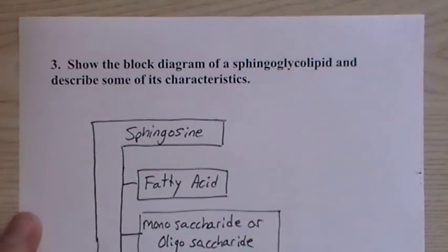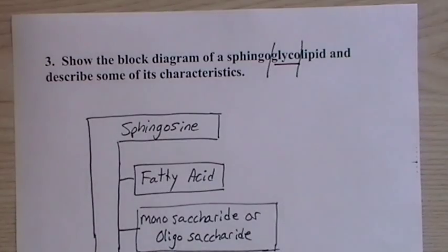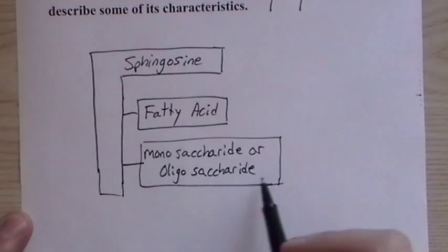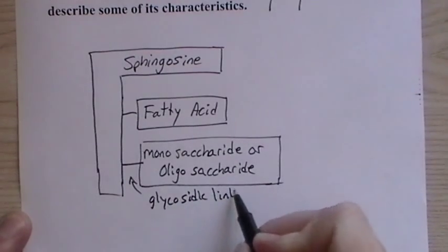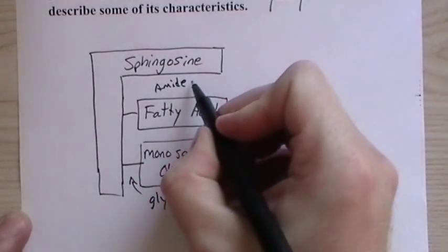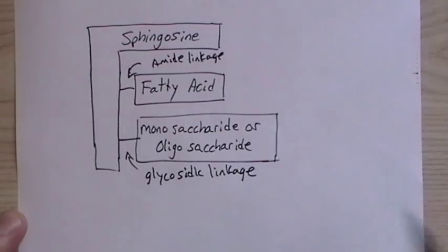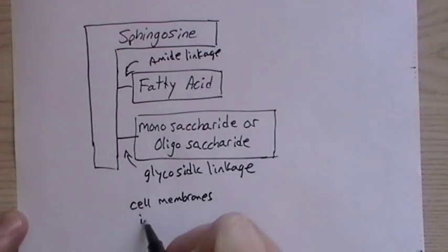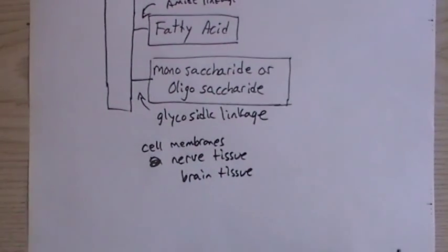Now we have a sphingoglycolipid. That glyco sounds like something dealing with sugars. Sphingolipid, so we should expect that it has a great deal of the same structure as before. But in this case, we have a monosaccharide, or an oligosaccharide. It can be a very long chain of these. And this is a glycosidic linkage to the monosaccharide, and then an amide here. And because we can add on sugar after sugar, that gives it a longer form, a different structure. But it's still used in cell membranes, in nerve tissue, and brain tissue.